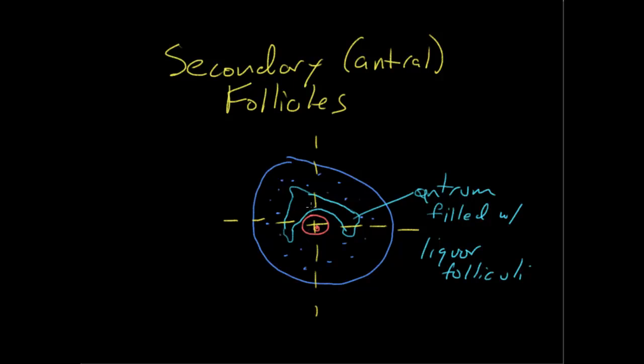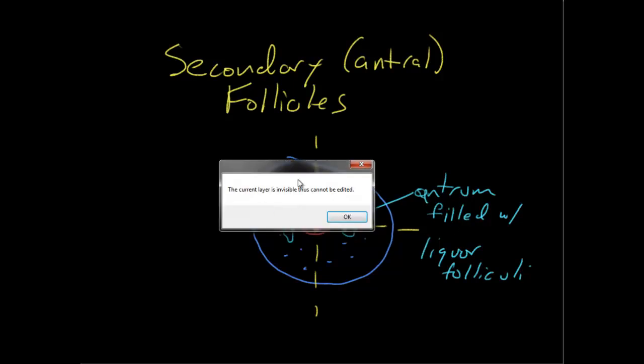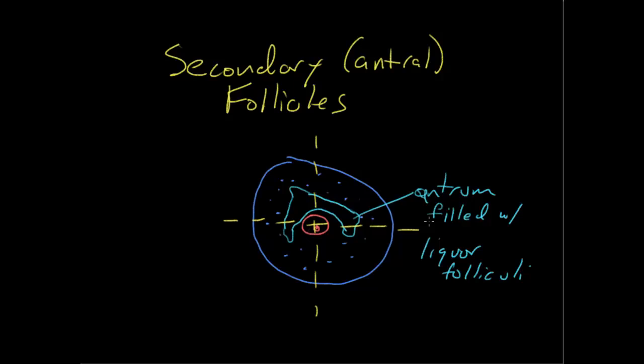Once you have some spaces in between the cells. One or more. Those spaces are called antra. And each antrum is going to be filled with liquor folliculi. And as long as that oocyte is still centered. Even if there's a single antrum. It is still a secondary follicle.